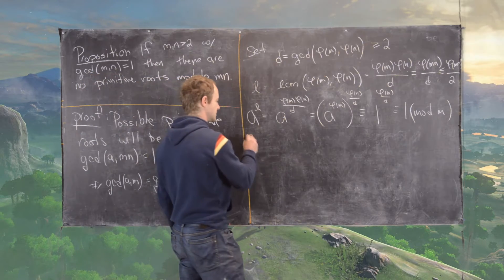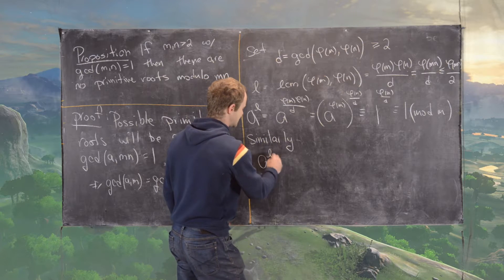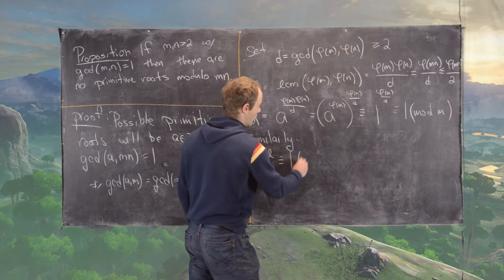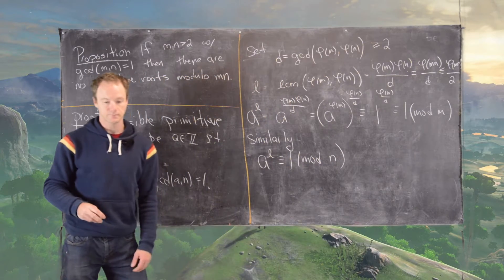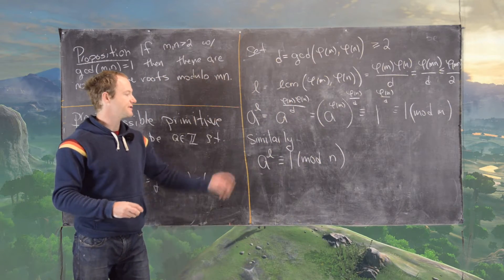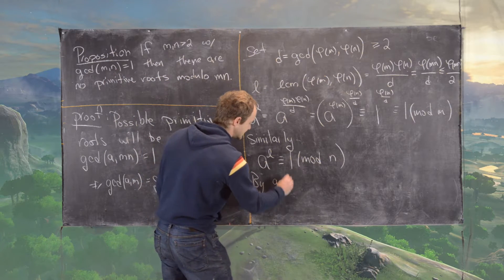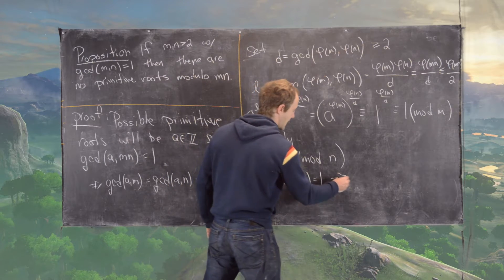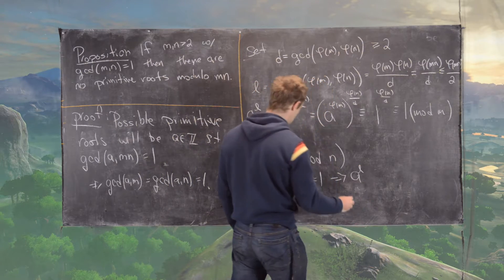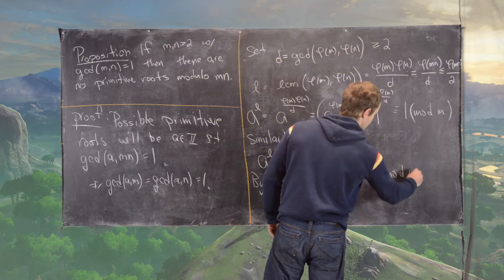And then similarly, we have A to the L is congruent to 1 modulo N. But now these two things together, again by the fact that the GCD of M and N equals 1, this implies that A to the L is congruent to 1 modulo MN.